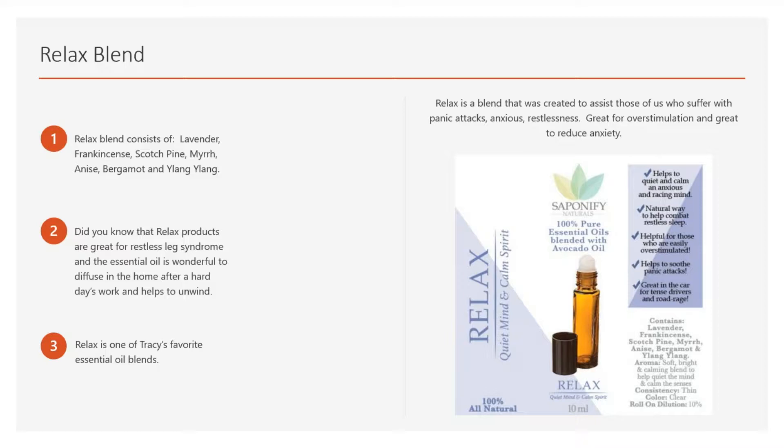The Relax blend consists of lavender, frankincense, scotch pine, myrrh, anise, bergamot, and ylang ylang oils — it's a powerhouse. Being that lavender is a primary oil, everybody wants to immediately say they just use lavender. Absolutely — this has lavender in it, but it also has anise. Anise oil has been proven through scientific studies to calm down people who suffer from anxiety and restlessness. All these oils are blended together to provide all these extra benefits.